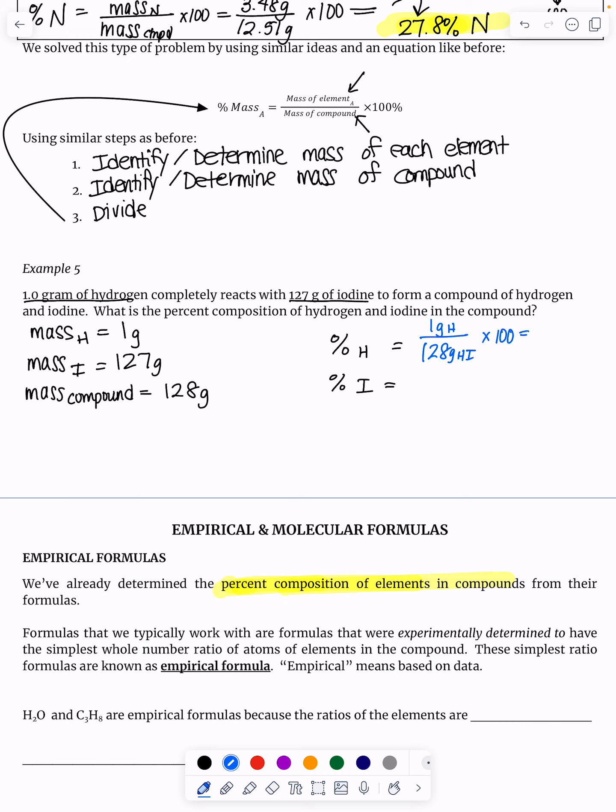And so if I do that, one divided by 128 times 100, I get about 0.78%.